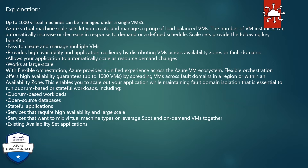Scale Sets provide the following key benefits: easy to create and manage multiple VMs; provides high availability and application resiliency by distributing VMs across availability zones or fault domains; allows your application to automatically scale as resource demand changes; works at large scale. With Flexible Orchestration, Azure provides a unified experience across the Azure VM ecosystem, offering high availability guarantees up to 1,000 VMs, by spreading VMs across fault domains in a region or within an availability zone. This enables you to scale out your application while maintaining fault domain isolation essential for quorum-based or stateful workloads, including quorum-based workloads, open source databases, stateful applications, services that require high availability and large scale, services that want to mix virtual machine types or leverage spot and on-demand VMs together, and existing availability set applications.